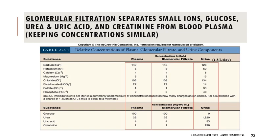Going from plasma to glomerular filtrate, concentrations remain pretty consistent. But urine tends to be very different because some things are concentrated in the urine and some things are removed. A lot of filtrate goes into nephrons but very little urine is produced in comparison, so proportions of things change dramatically. For example, urea is heavily concentrated in the urine compared to plasma and filtrate, and similarly with creatinine.